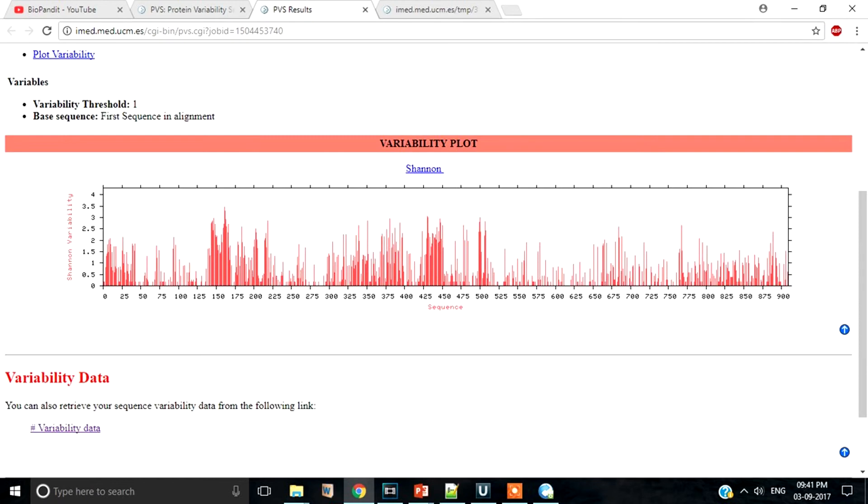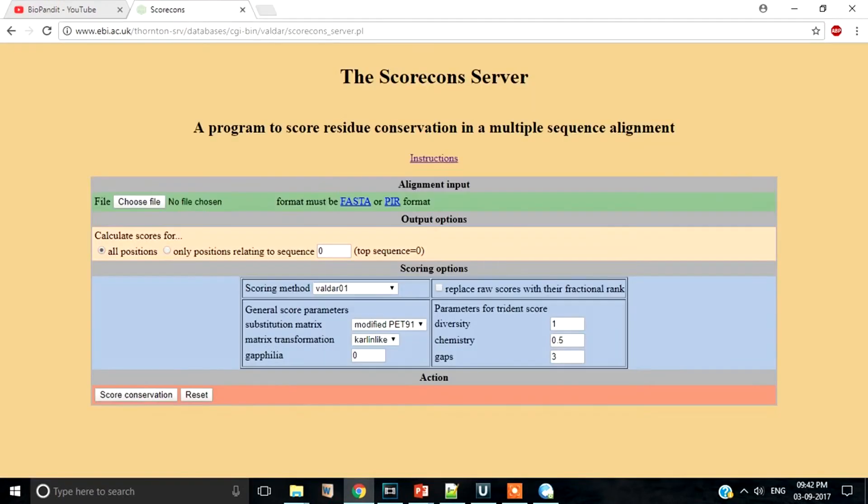The problem with Shannon entropy is that there is no specific upper limit of a score. If we just normalize these scores within the range 0 to 1, that is much more easily understandable isn't it? To do this we go to score coins web server.